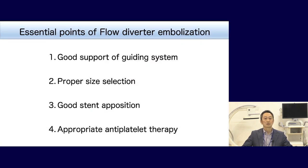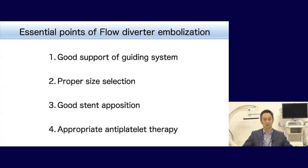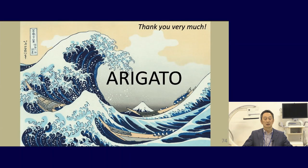The essential points of flow diverter embolization are: good support of the guiding catheter, proper size selection, good stent landing position, and appropriate antiplatelet therapy. Thank you very much.